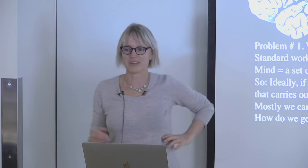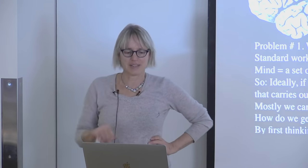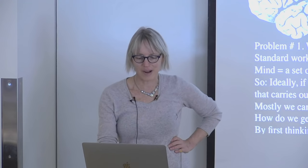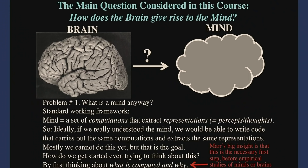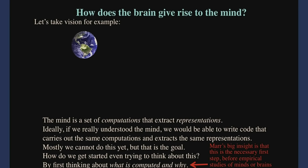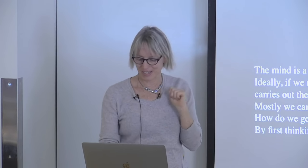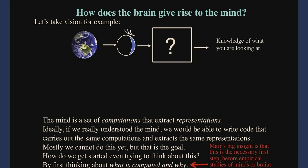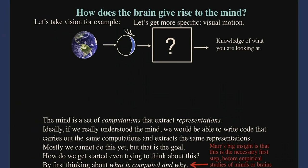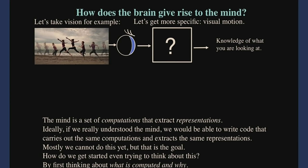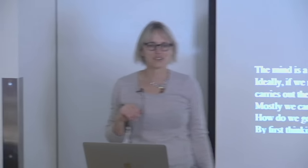The question is how we even get off the ground launching a precise computational theory of what minds do. The first step is thinking about what is computed and why — that's the crux of David Marr's big idea. Take vision for example: you start with a world that sends light into your eyes, an image forms on the retina, some magic happens, and you know what you're looking at.